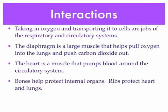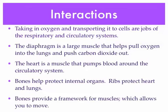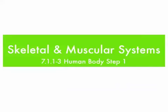Bones help protect our internal organs — for example, the ribs, which are part of the skeletal system, protect the heart and lungs, which are part of the circulatory and respiratory systems. Finally, bones work with muscles by providing a framework for them, and the muscles allow you to move. This lesson covered the skeletal and muscular systems and compared them to the respiratory and circulatory systems.